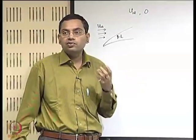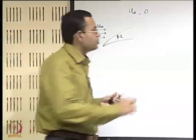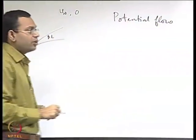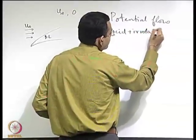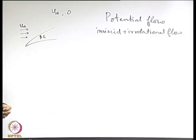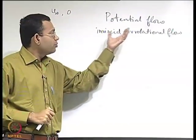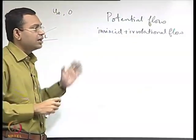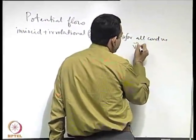When the velocity field remains irrotational, we may always describe it through the gradient of a scalar potential. We may always express the velocity field through the gradient of a scalar potential if it is irrotational, and such a flow is known as potential flow. Potential flow is therefore equivalent to inviscid and irrotational flow.